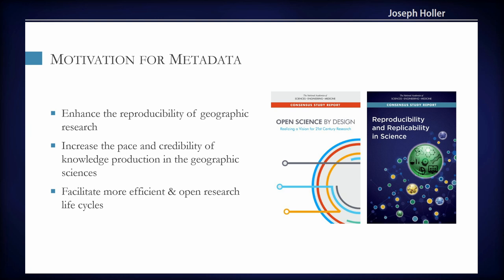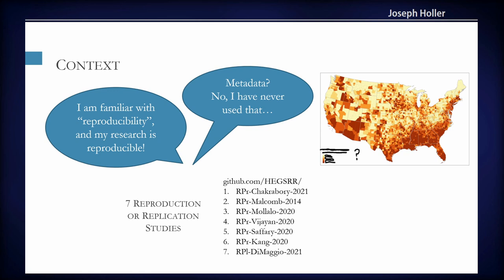So what's happening in geography? For some context from our research project, we have surveyed geographers about their research practices, finding that most folks would say they're familiar with reproducibility and their research is also reproducible. However, when asked about metadata, they would say they've never used that before and aren't sure quite what it is or how to do it. Unfortunately, providing data or even code alongside a research publication without the metadata is sort of like publishing a map with no title or legend, leaving serious questions about the data and its proper use unanswered.